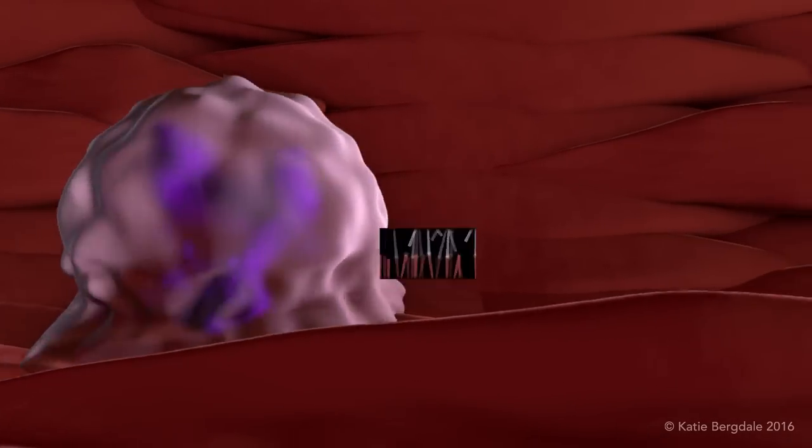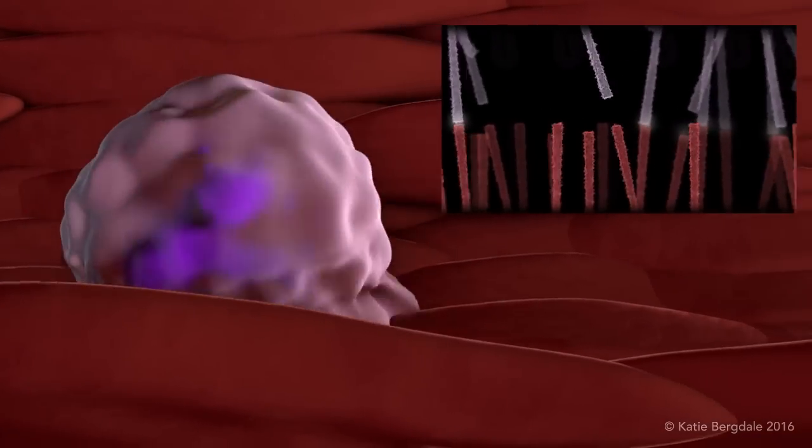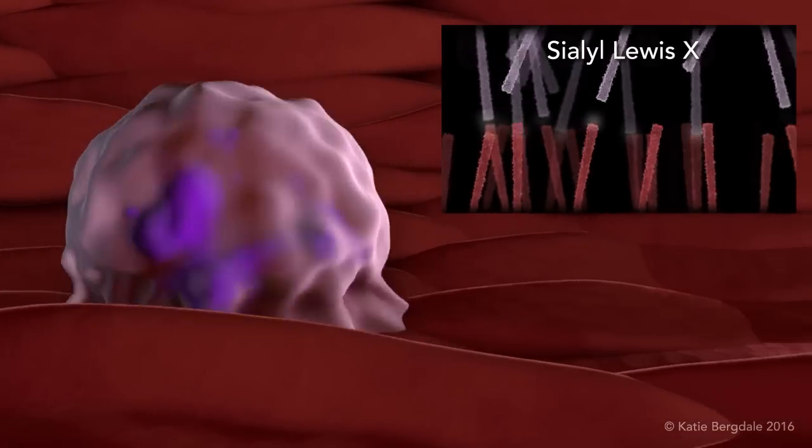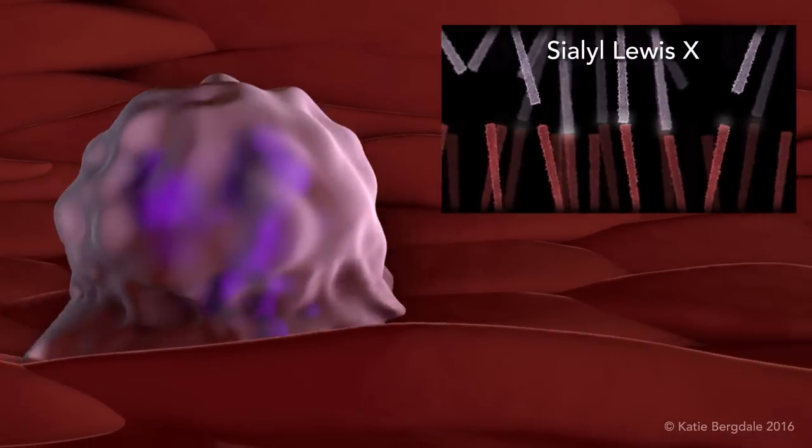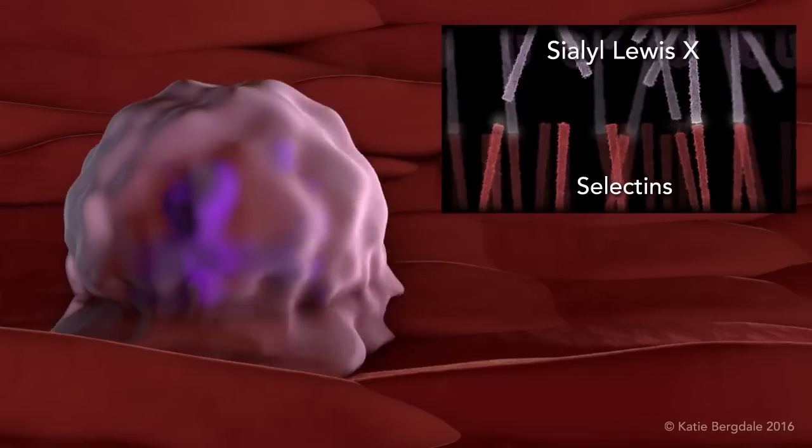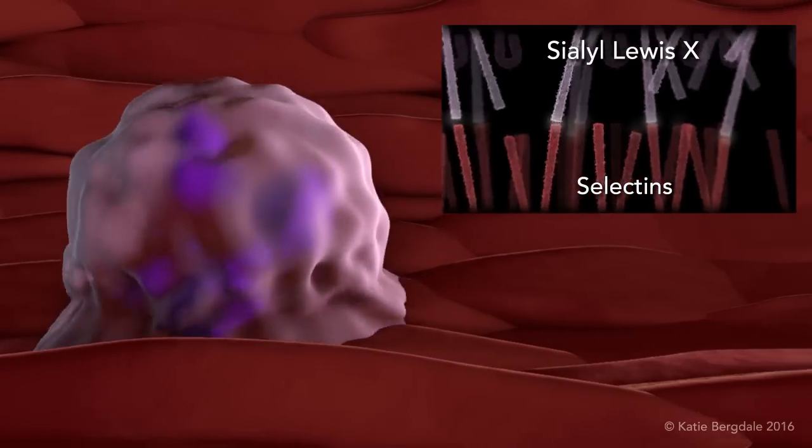The neutrophils are slowed down by the formation of weak transient bonds between Sialyl Lewis X, a carbohydrate expressed by neutrophils, and selectins, adhesion molecules produced by endothelial cells.